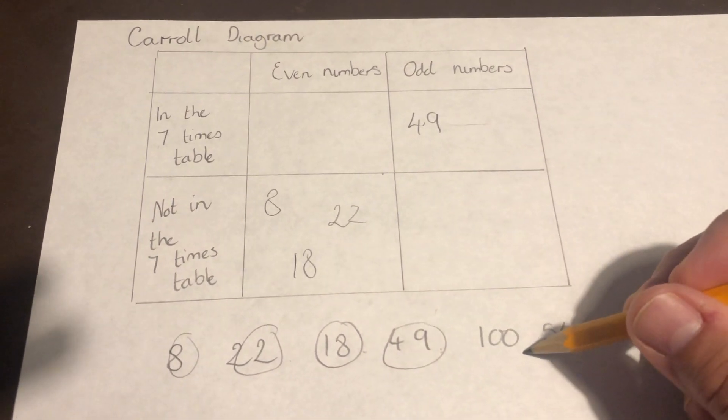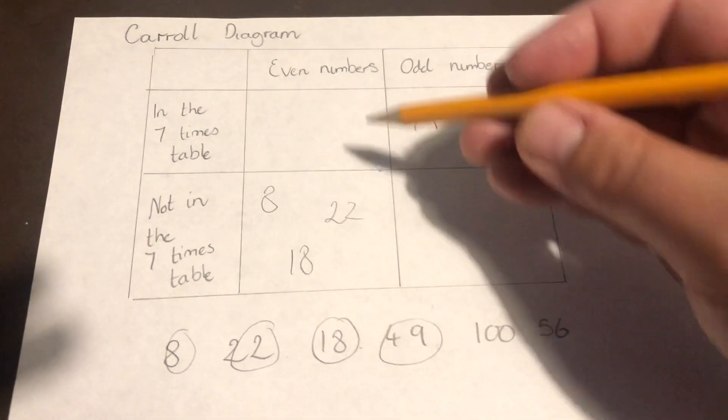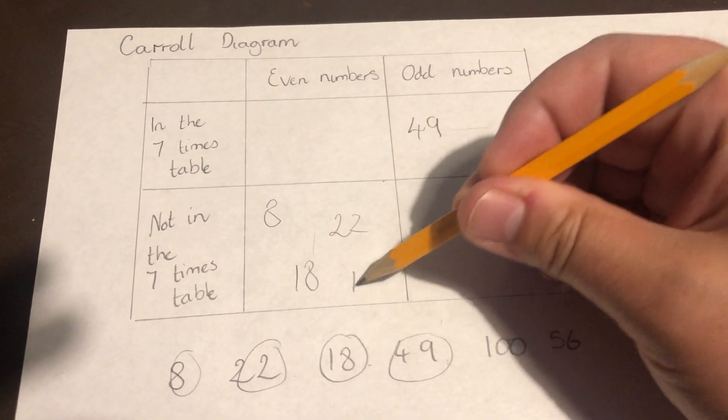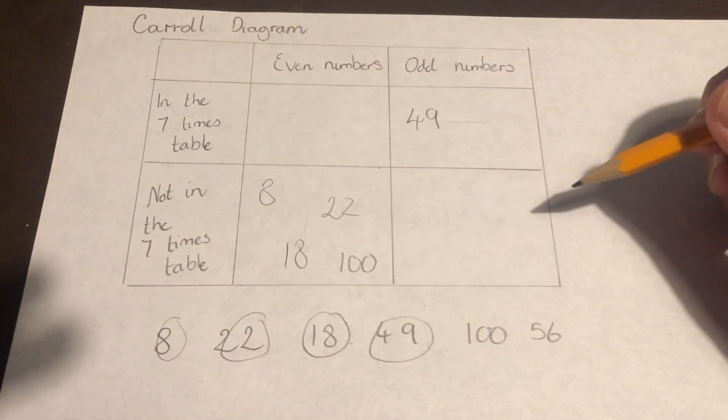We've got 100 left. 100 is an even number. It's going to go in here, and it is not in the seven times table.